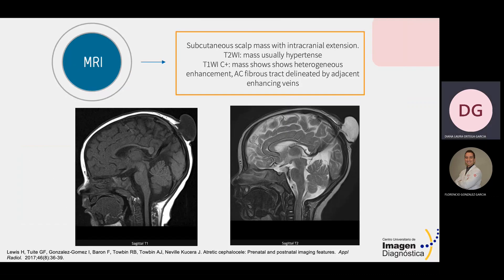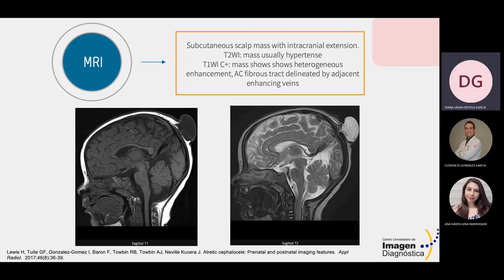On MRI, we see the same mass characteristics. T2-weighted MRI brain images show a mass with high signal and low signal on T1-weighted images. When contrast is used, the mass shows heterogeneous enhancement with the fibrous tract outlined by adjacent enhancing veins.